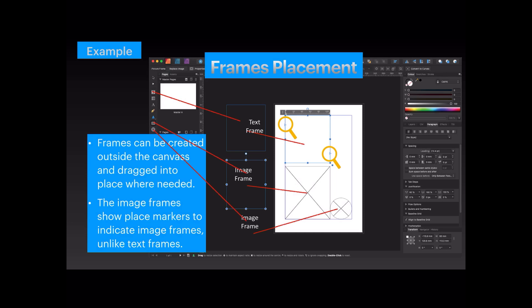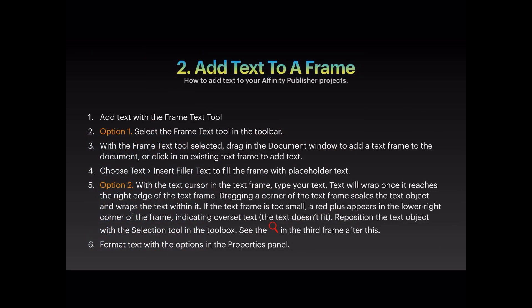There are also shape frames — for example, a circle — and image frames show place markers to indicate image frames, unlike text frames which don't have those markers. To add text to a frame, select the frame text tool in the toolbar, then drag in the document window to add a text frame, or click in an existing text frame to add text. Sometimes the cursor will be hidden in the top-left corner of a blank frame, so be aware of your text size.